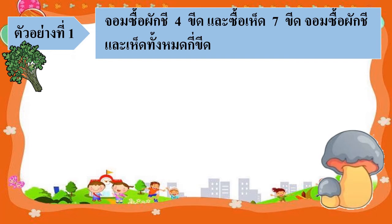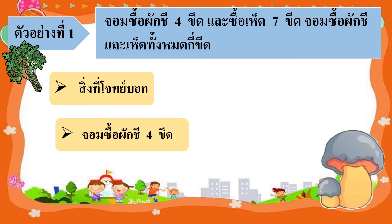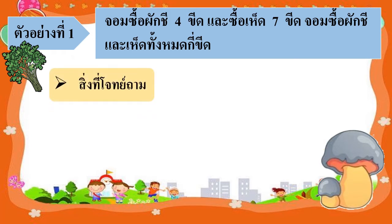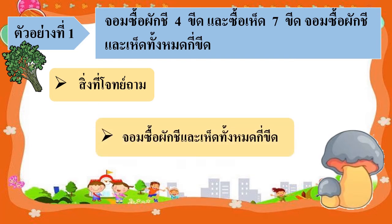ก่อนอื่นคุณน้องจะพาเด็กๆไปวิเคราะห์โจทย์ปัญหากันก่อน เด็กๆต้องทราบว่าสิ่งที่โจทย์บอกและสิ่งที่โจทย์ถามคืออะไร จากโจทย์นะคะ สิ่งที่โจทย์บอกคือ จอมซื้อผักชี 4 ขีด และซื้อเหตุ 7 ขีด สิ่งที่โจทย์ถามคือ จอมซื้อผักชีและเหตุทั้งหมดกี่ขีด